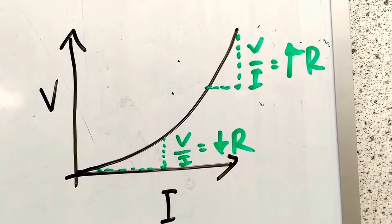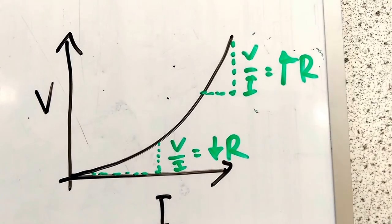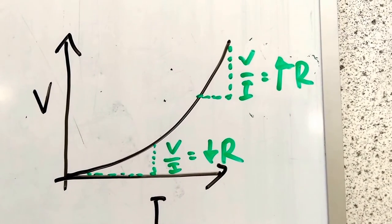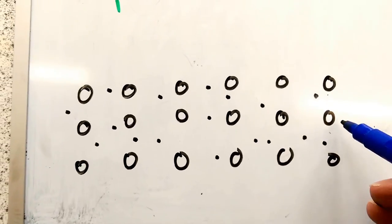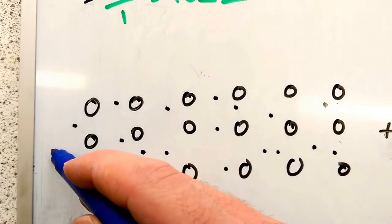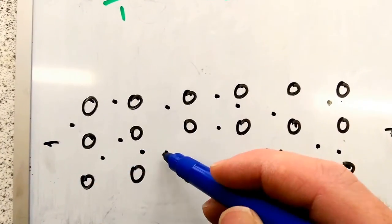Well, why is that? Well, that's because the filament, the metal in the filament, behaves like most conductors, most metals. And when you put a potential difference across the metal, you get a current flowing. That's fine.